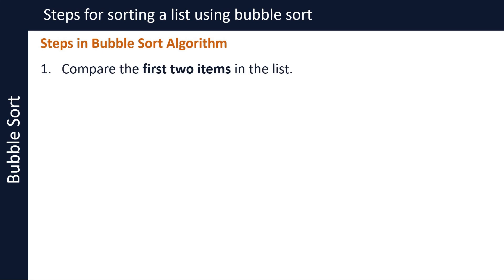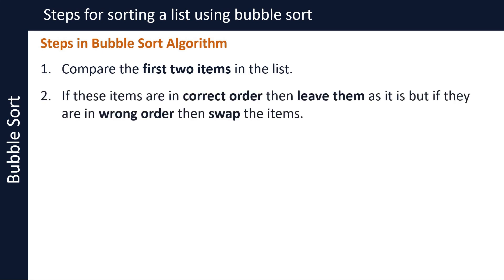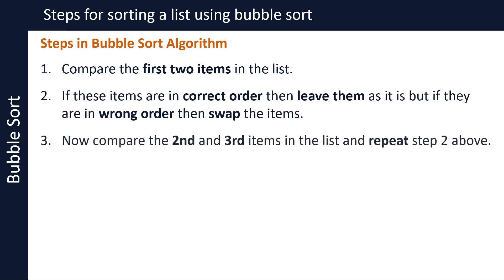The steps in the bubble sort algorithm are as follows. Bubble sort starts by comparing the first two items in the list. If these items are in the correct order, leave them as they are. But if they are in the wrong order, swap the items. So if we are sorting a list of numbers in ascending order and the first number is smaller than the second, that is the correct order and we don't swap. But if the first number is bigger than the second, they are in the wrong order and we should swap them. The opposite is true if we are sorting in descending order.